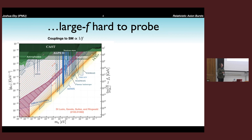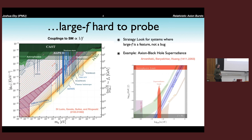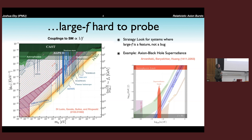One strategy for going to large decay constants is to look for systems where the suppression of 1/f is not necessarily a bug but may be a feature. A good example is black hole super-radiance, where constraints come up from the bottom rather than down from the top — in such cases you actually want small axion self-interactions, because when self-interactions are small these super-radiant clouds can build up lots of mass and spin down rotating black holes. The question is: are there other systems like this?